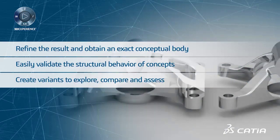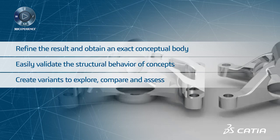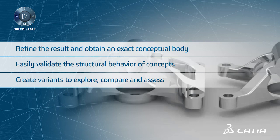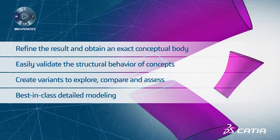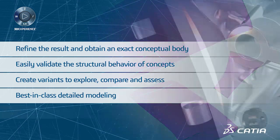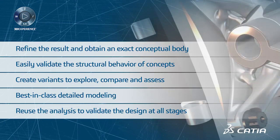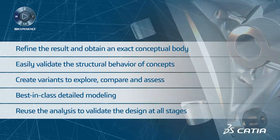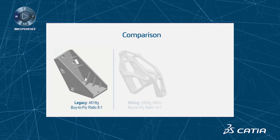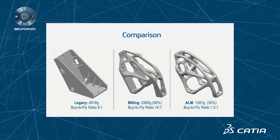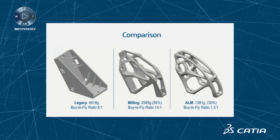Create variants to explore, compare, and assess different configurations against KPIs and select the best concept. CATIA's best-in-class detailed modeling simplifies part refinement. You can reuse the analysis to validate the design at all stages of the process. All of these benefits combine to make CATIA a unique solution that delivers a real competitive advantage to address today's market needs.